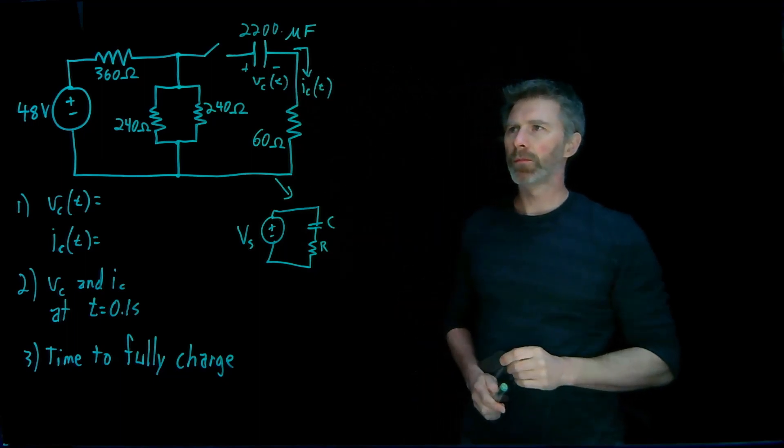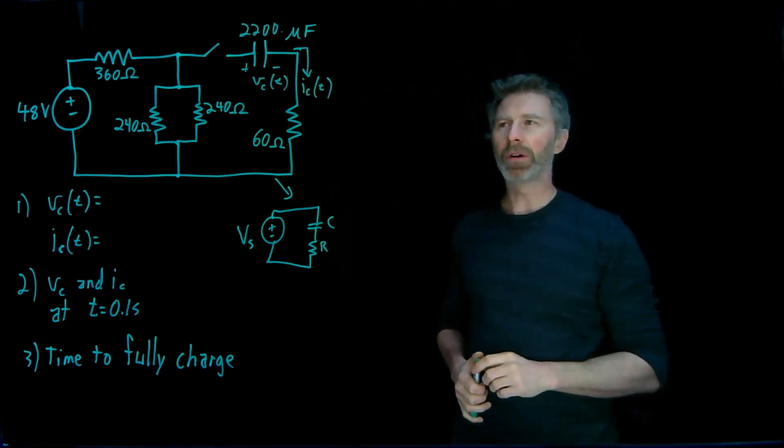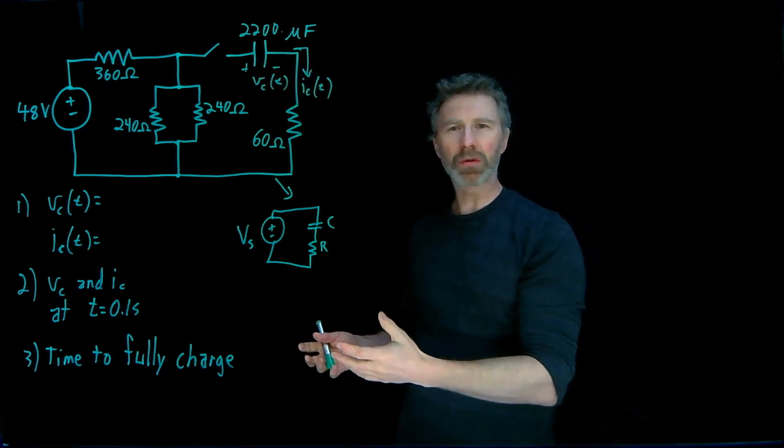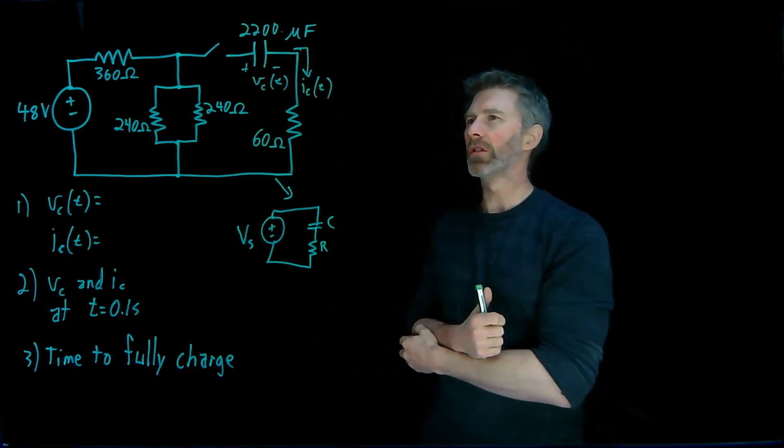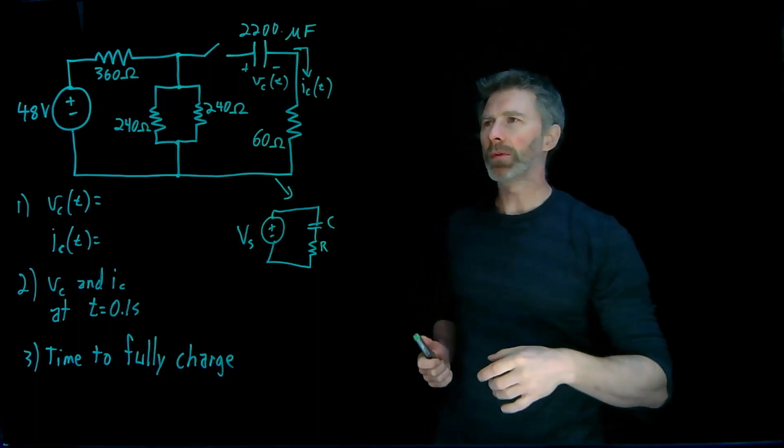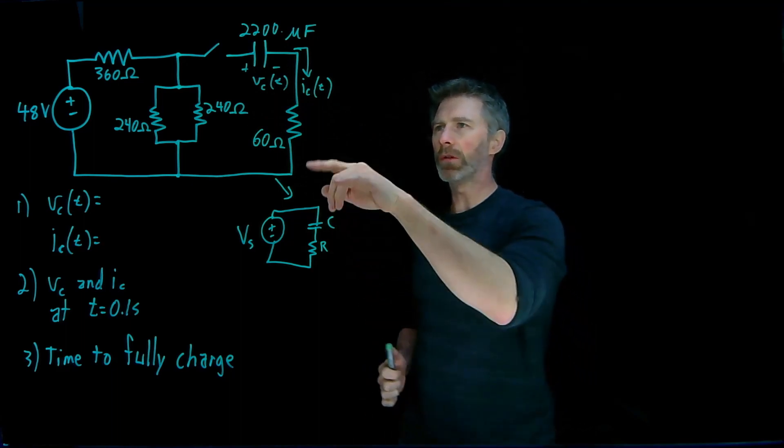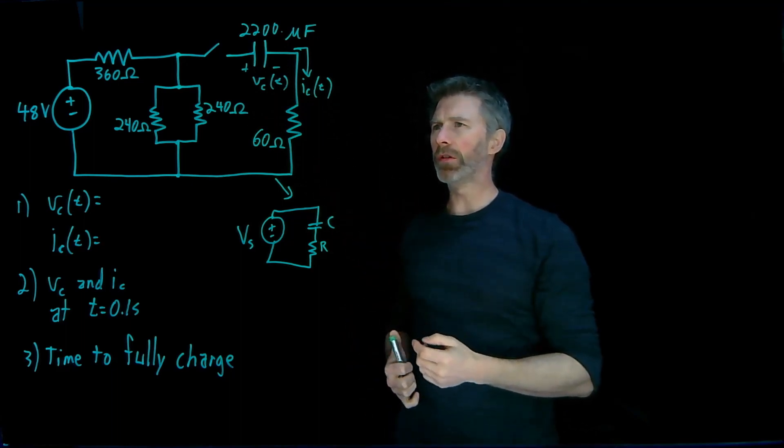So how do we do this? We'll remember how to thevenize a circuit. And that was from a point in the circuit, what does the voltage source and what's the resistance look like from that particular point? So basically, what we're going to do is thevenize the circuit around the capacitor right here. So a number of steps that we need to go through to do that.